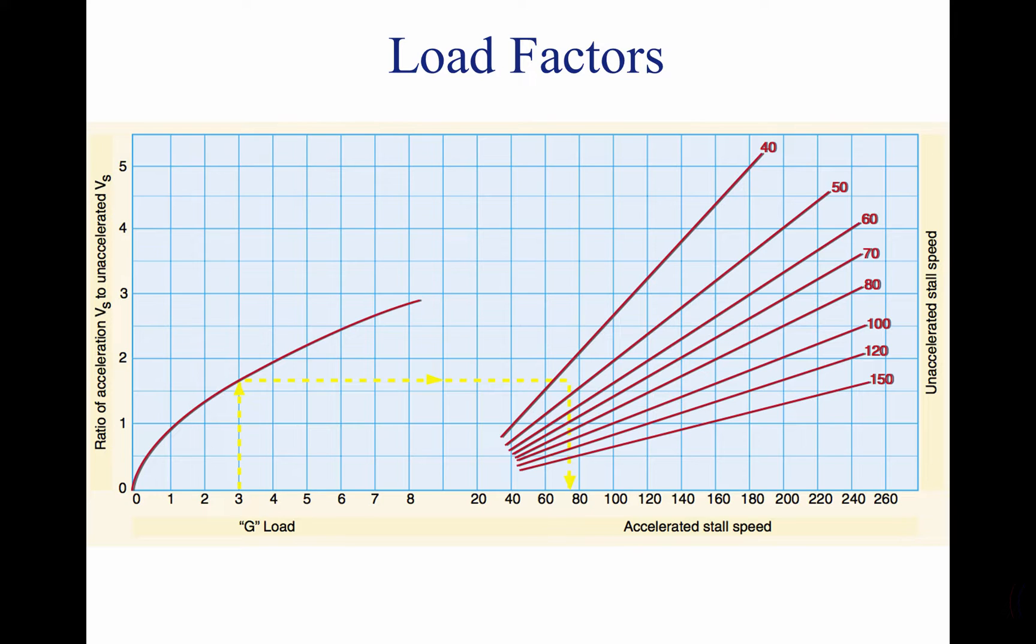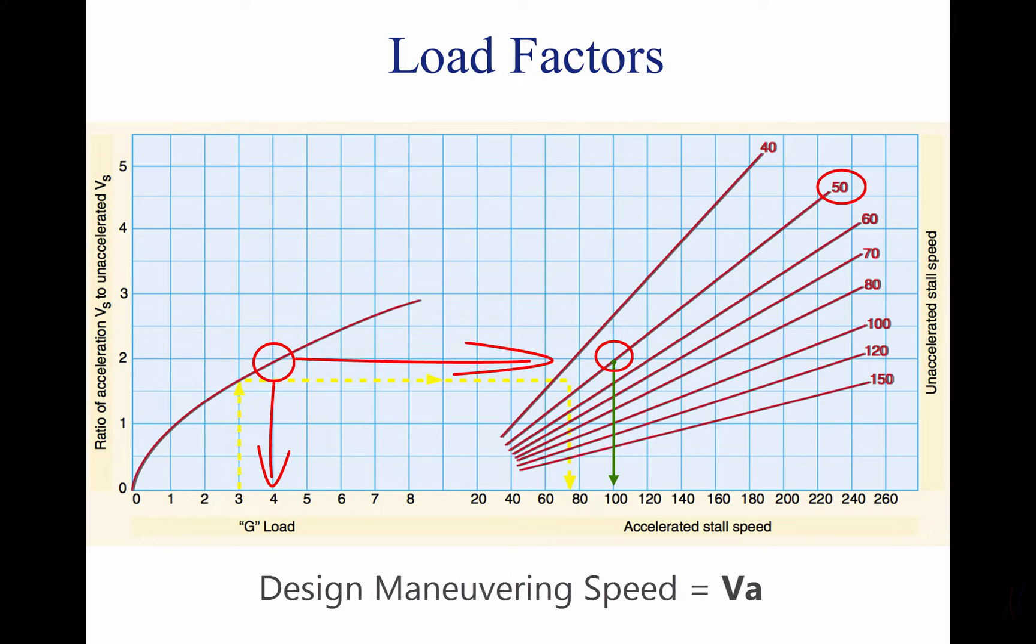This means that an aircraft with a normal, unaccelerated stalling speed of 50 knots can be stalled at 100 knots by inducing a load factor of 4 g's. The maximum speed at which an aircraft may be stalled safely is now determined for all new designs. This speed is called the Design Maneuvering Speed, or VA. A thorough knowledge of load factors induced by varying degrees of bank and the VA aids in the prevention of two of the most serious types of accidents.